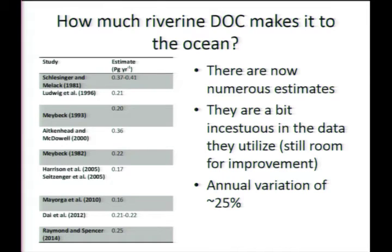I want to spend a few minutes on the other two dissolved fluxes: dissolved organic carbon and dissolved inorganic carbon in the form of bicarbonate. For DOC flux to the ocean, the historic estimates don't have a huge amount of spread, but when you read the papers they're quite incestuous in the data they use, and our modeling approaches are not really that sophisticated. They're honing in on about 0.25 petagrams, though there's still room for improvement and surprises could come. We know DOC is tightly correlated to discharge, and annual global discharge varies by about 25%, so these fluxes vary globally by the same amount.